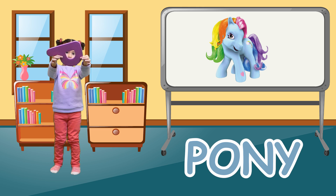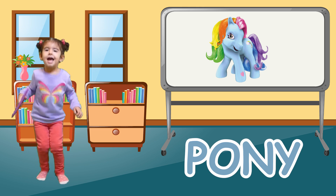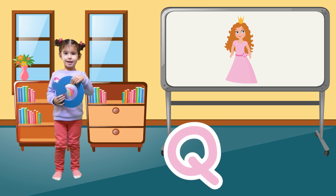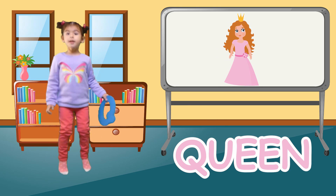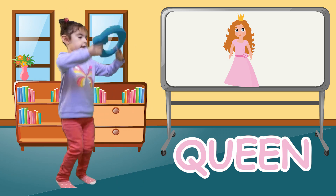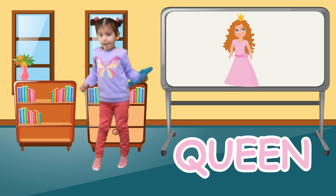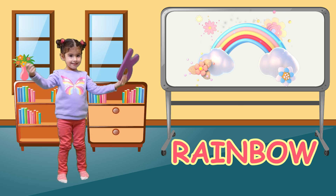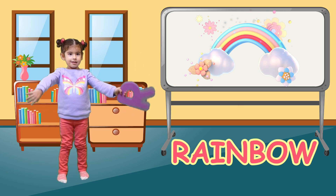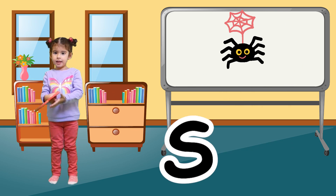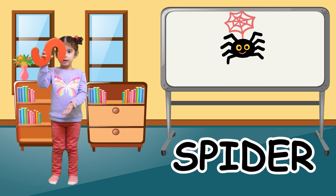P is for pony. P, pony, P, pony, P, pony. Q is for queen. K, queen, K, queen, Q, queen. R is for rainbow. R, rainbow, R, rainbow, R, rainbow.